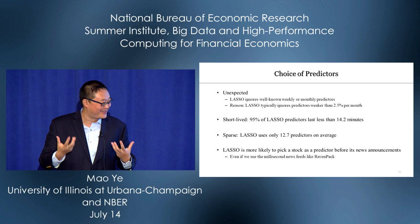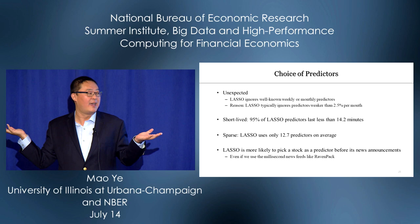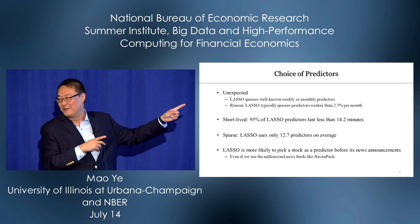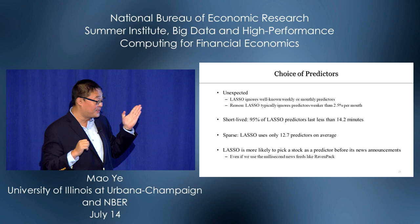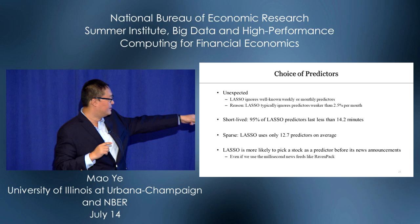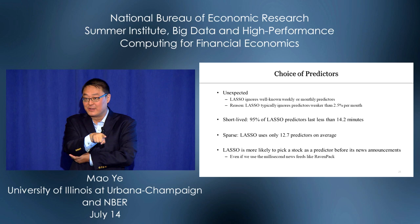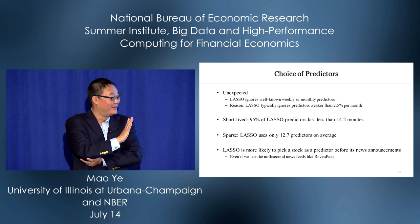Will you become super rich? No — there's a trade-off. 95% of LASSO predictors picked at the minute-by-minute horizon disappear within 14.2 minutes. And it's sparse: LASSO uses only 12.7 predictors on average. The most significant and surprising result is that LASSO is more likely to pick a stock as a predictor before that stock has a news announcement, even using the best news announcement data feeds.